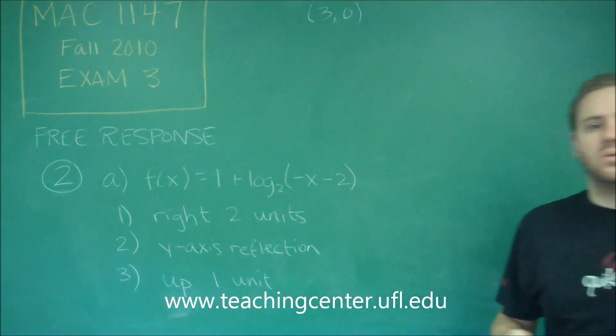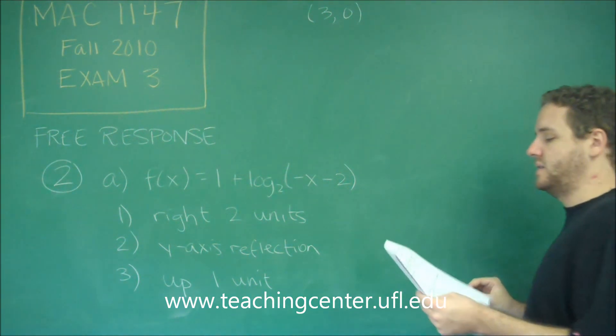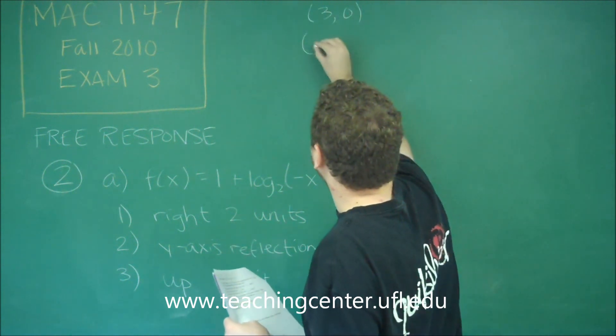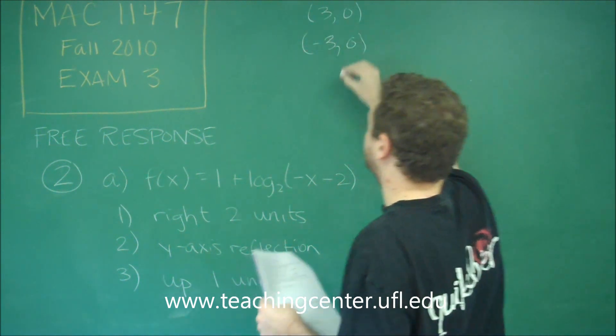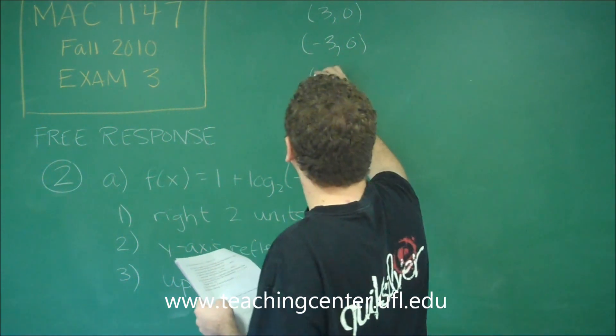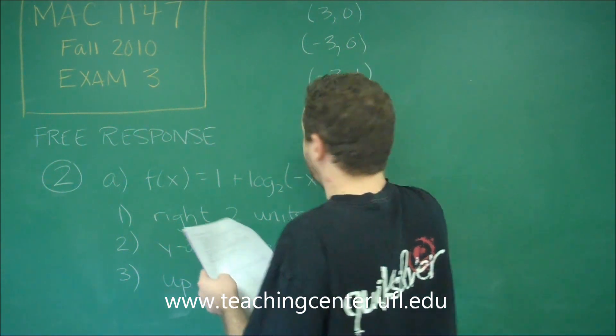We would reflect it across the horizontal axis so now instead of going from 3, 0 it would flip over to the other side so now it would be negative 3, 0. And a vertical shift up a 1 would give us negative 3, 1.